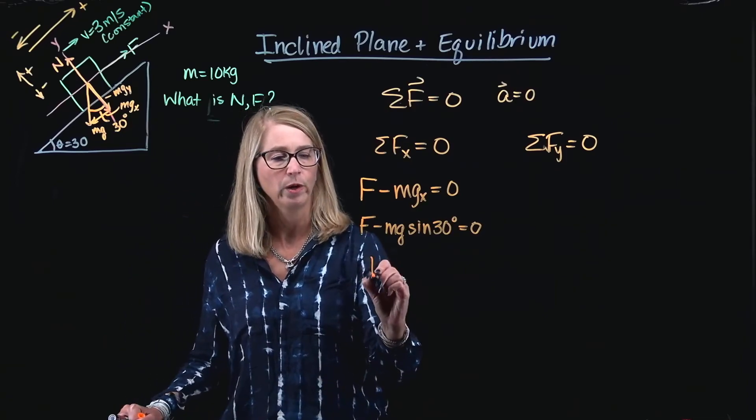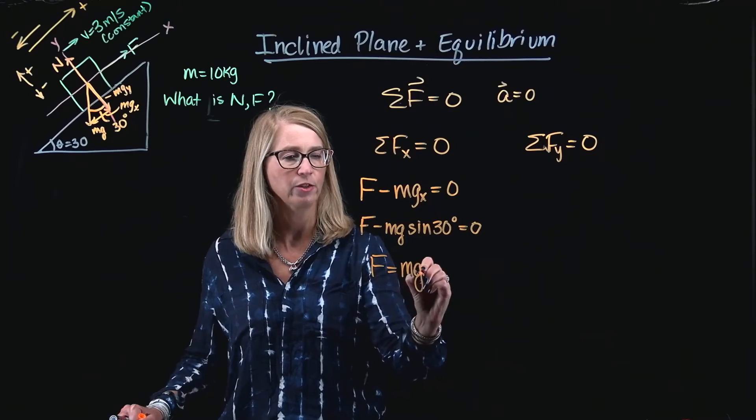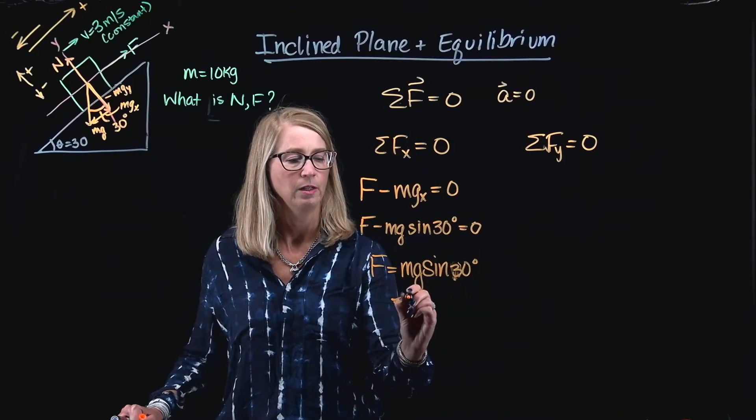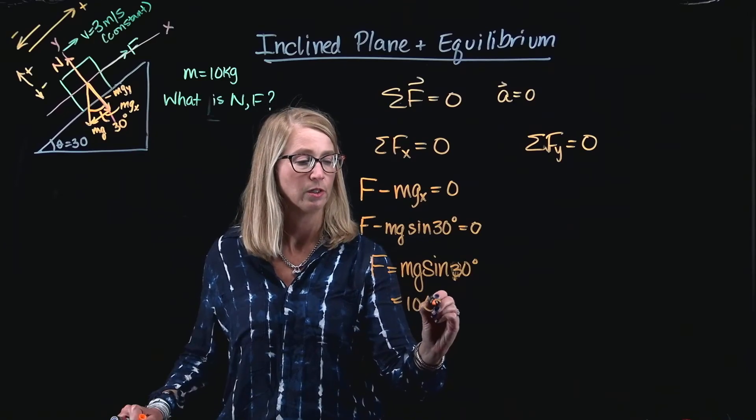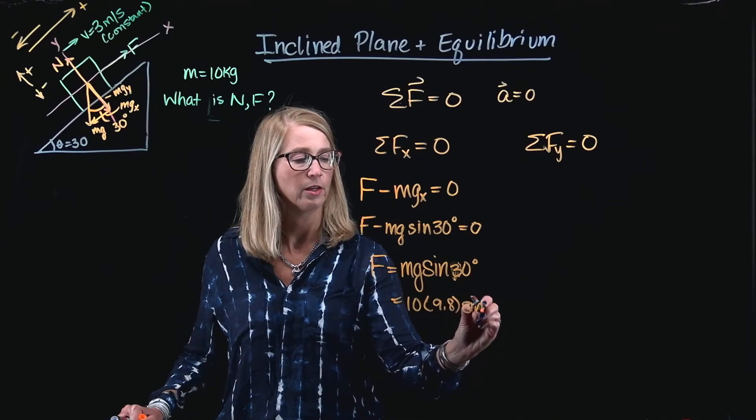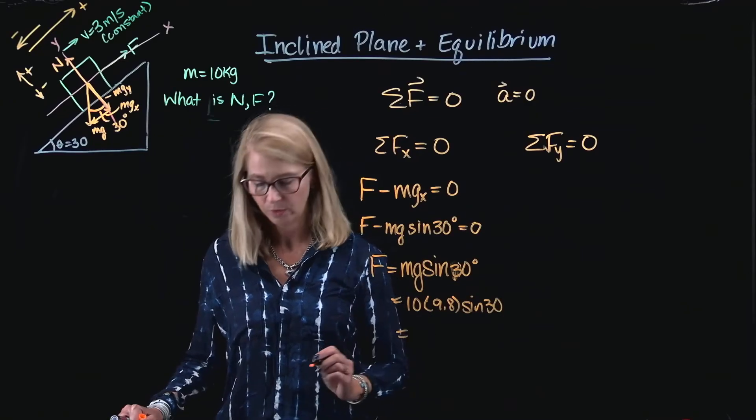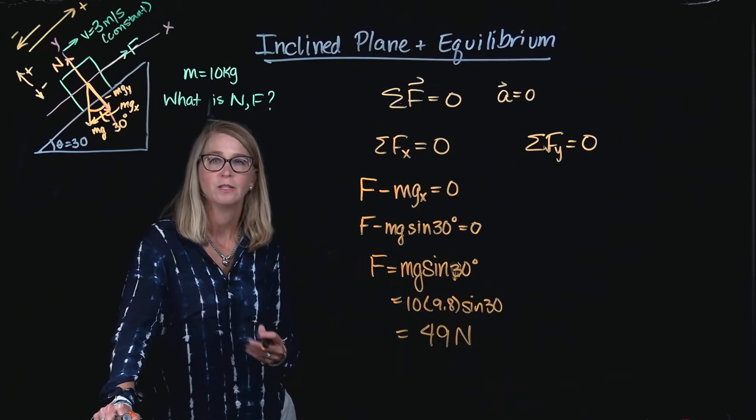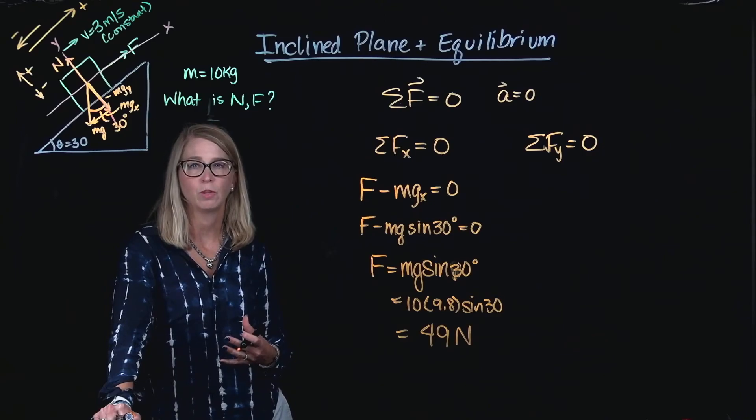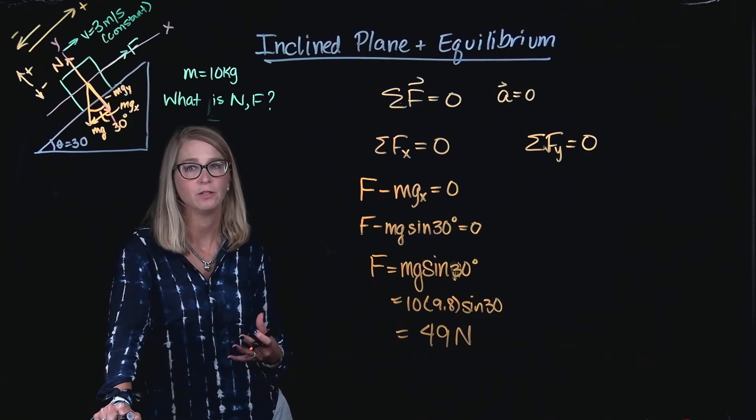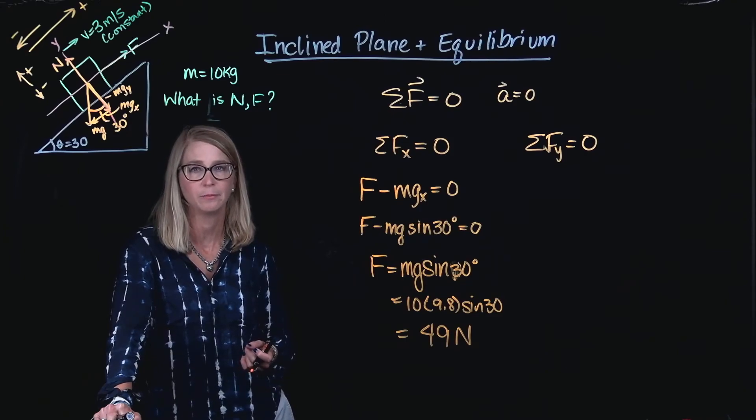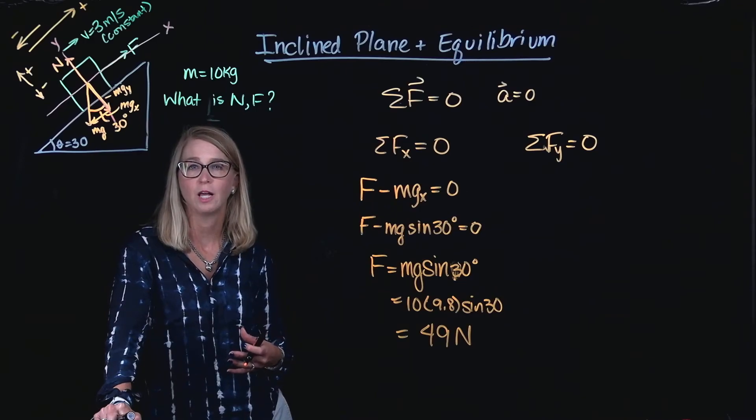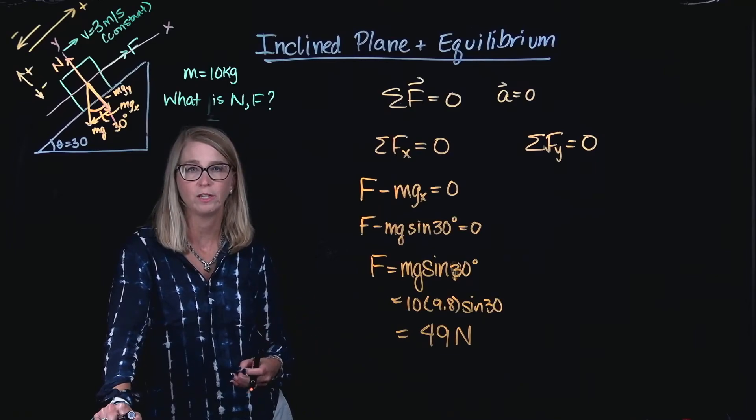This actually allows me to quite easily figure out what the force is, because I can just rearrange this to solve for F. I've been told that the mass is 10 kilograms, gravity is 9.8, and then the sine of 30. If I multiply that out, I find that my force is 49 newtons. Essentially, the force that's being applied to this block is equal and opposite to the component of weight that pulls it down the incline. And that keeps it from accelerating in one direction or the other, and so it can move at a constant velocity as long as that force stays equal to that weight component.